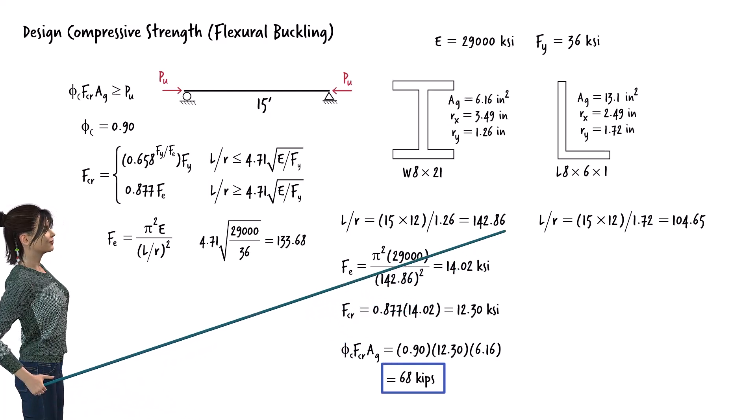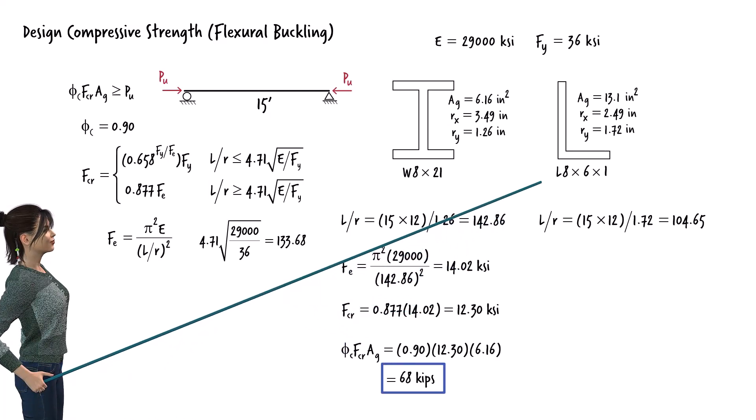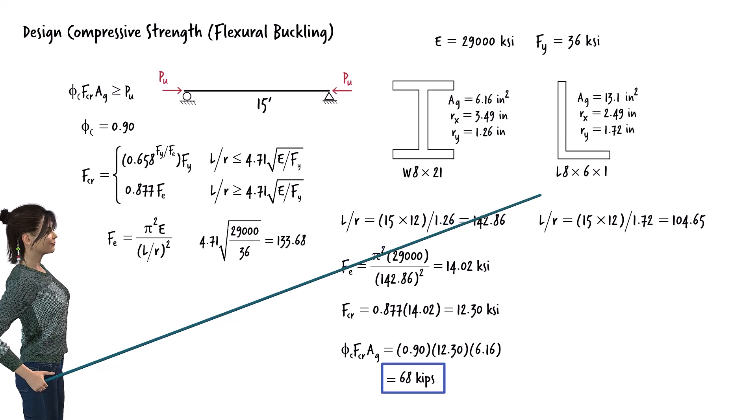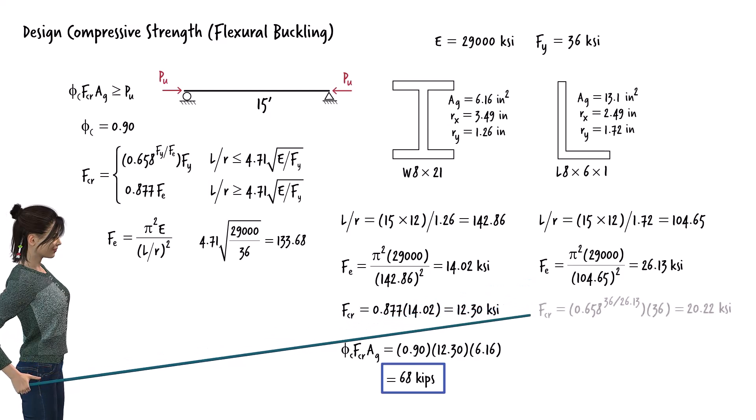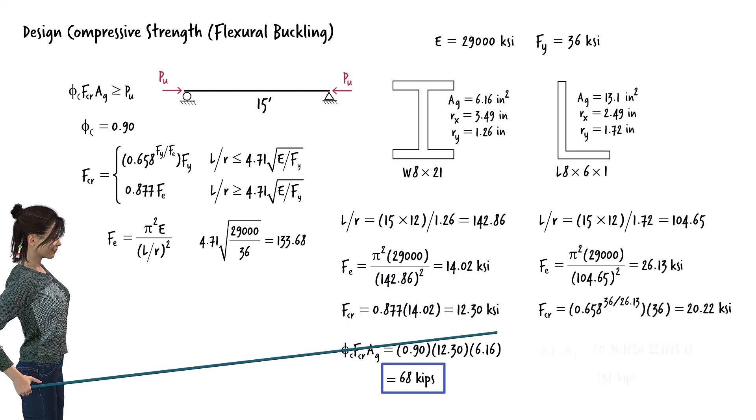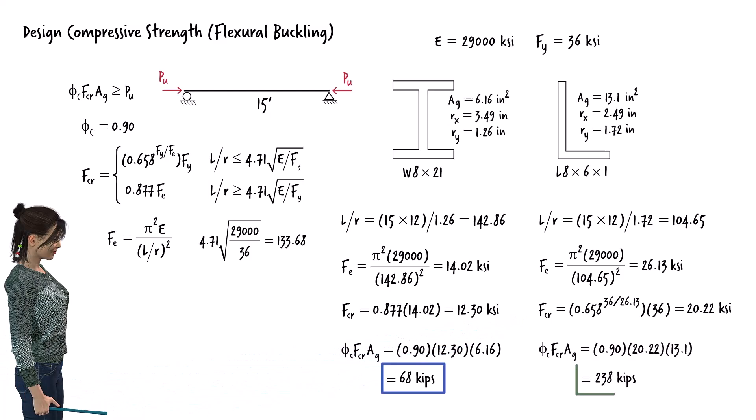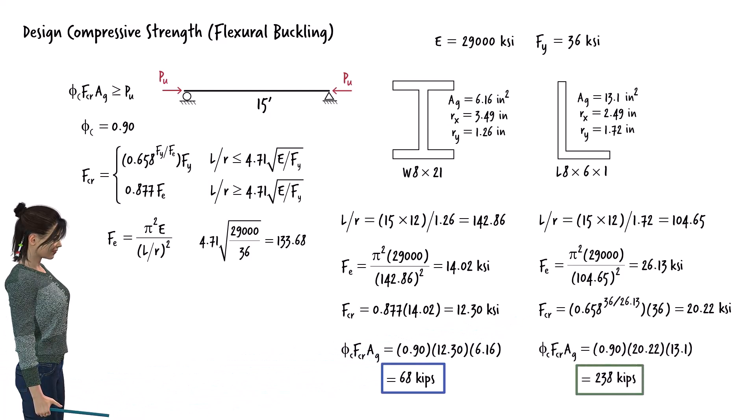If the member has an L-8 by 6 by 1 cross-section, the Euler buckling equation gives the calculated value, hence the nominal buckling strength becomes this value, yielding a design strength of 238 kips.